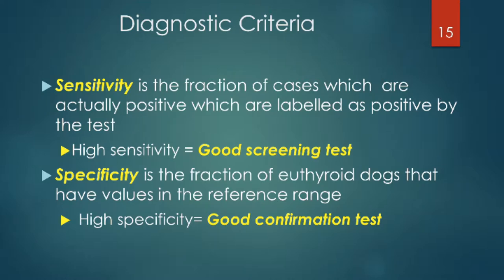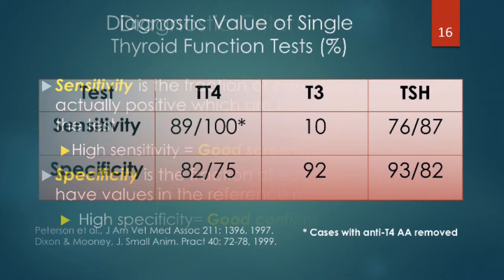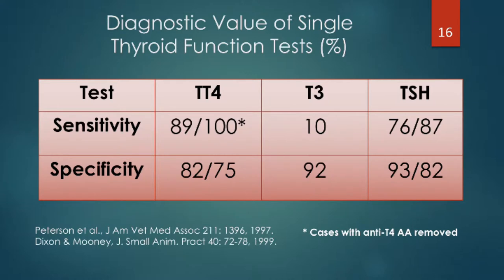Let's take a look at the three primary individually measured analytes: total T4, total T3, and TSH, and evaluate them individually on the basis of these two criteria. This is based upon data that's been in the literature for over 20 years now, and our observations are still consistent with this.